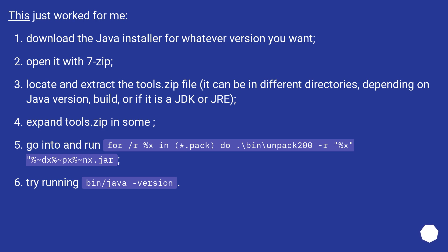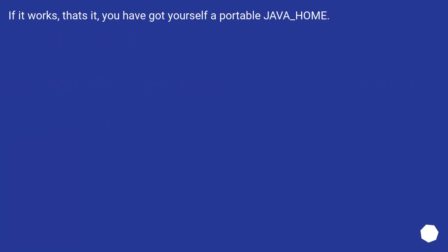Download one of the tar.gz versions. This just worked for me: download the Java installer for whatever version you want, open it with 7-zip, locate and extract the tools.zip file — it can be in different directories depending on Java version, build, or whether it is a JDK or JRE. Expand tools.zip somewhere, then run: for /a %x in (*.pack) do .\bin\unpack200 %x %~dx%~px%~nx.jar. Try running bin/java -version. If it works, that's it — you have yourself a portable JAVA_HOME.